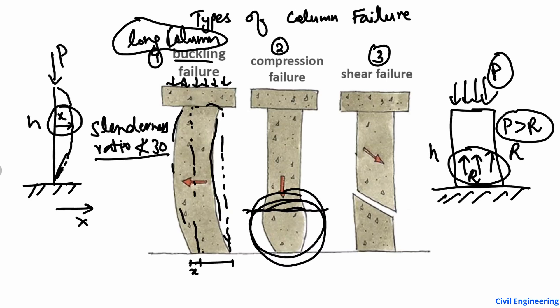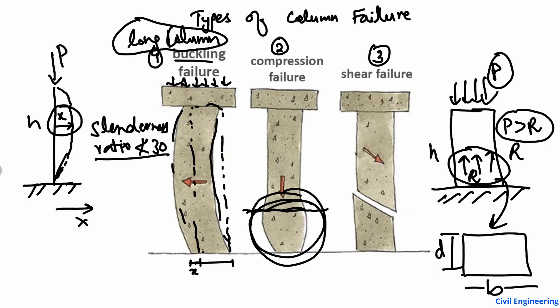To increase the compression capacity, we can use high-strength concrete or change the geometry. For example, if the cross-section has width B and depth D, we can increase these two parameters to increase the compressive resisting capacity and avoid compression failure.